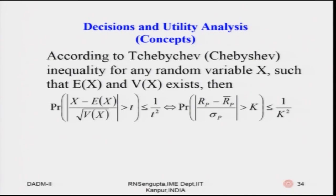I did mention Chebyshev's inequality and Markov inequality very fleetingly — I recall doing so in DADM 1 — and I want to utilize that concept for DADM 2 in the context of the safety first principle. According to Chebyshev's inequality, for any random variable x such that the first moment E(x) and second moment V(x) exist, the inequality will hold true.